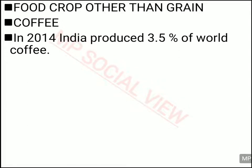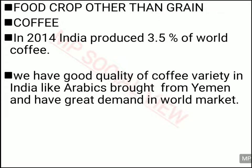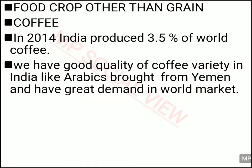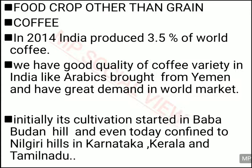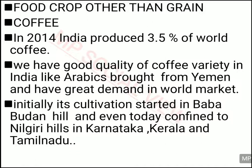Now let's discuss about coffee. In 2014, India produced about 3.5% of the world's coffee. We produce the best type of coffee — the Arabica variety brought from Yemen — which has great demand in the world market. Coffee cultivation was initially started in the Baba Budan Hills of South India and is still confined to the southern part of India in the Nilgiri hills near Karnataka, Kerala and Tamil Nadu.